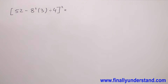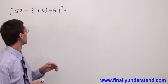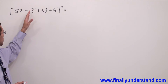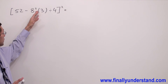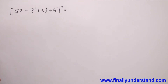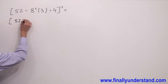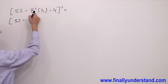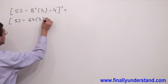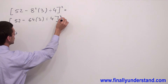We have another example on the board. Again we are going to start from the operations inside the brackets. We have subtraction, power, multiplication, and division. I'm going to copy down the bracket. 8 to the second power is equal to 64, times 3, divide by 4, and everything is raised to the second power.